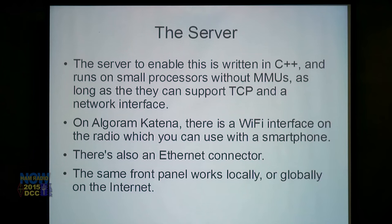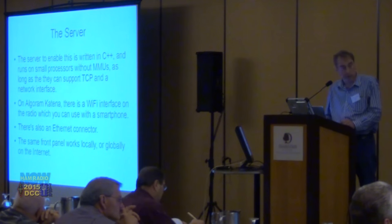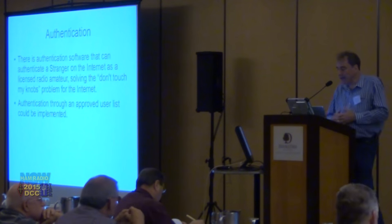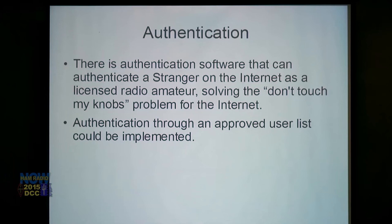On the Algoram Katena radio there's a Wi-Fi interface you can use with a smartphone, a Bluetooth interface, and an Ethernet connector, so the same front panel works locally or globally on the internet. There's authentication software that can authenticate a stranger on the internet as a licensed radio amateur, thus solving the 'don't touch my knobs' problem. Authentication through an approved user list could also be implemented. The nice thing about using the web is that any problem that's been solved for the web is solved for you as well.